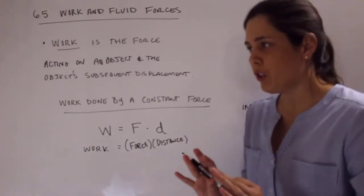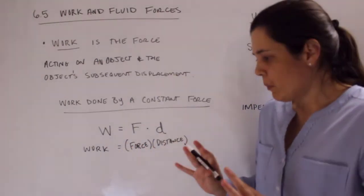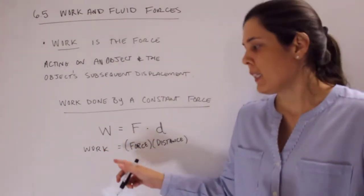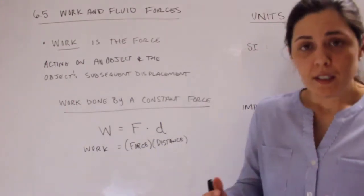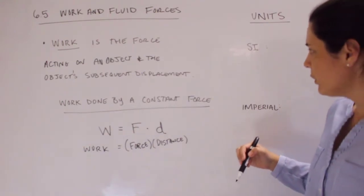So if you're going to push a box 2 feet, that would be 2 for distance and then how many pounds of force you're using. We'll talk about the units in a second. That would represent force. Then the units, like I just mentioned, we're going to have two different types depending on which system we're using.